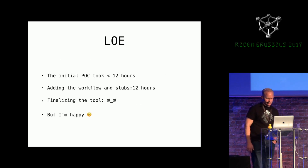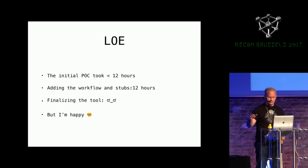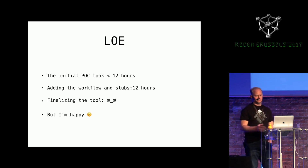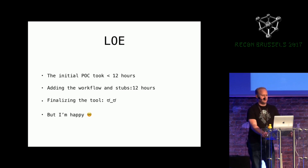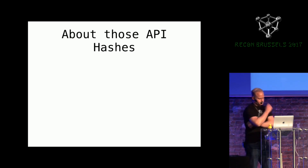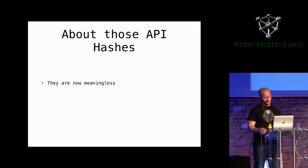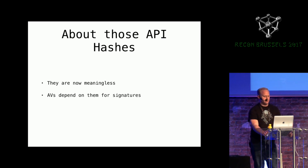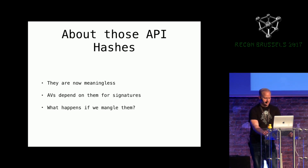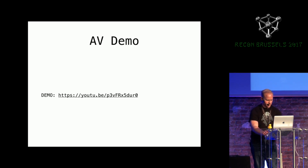The initial POC only took 12 hours to make the offset table and design it. Adding the workflow took about another 12. Finalizing the tool took a lot of time, but I'm happy with where it's going. What's really fun about this is that now the API hashes are completely meaningless — after I figure out what APIs there are, I can do whatever I want with them. And it turns out that antiviruses depend on those hashes for signatures. So I added the ability to mangle the hashes.